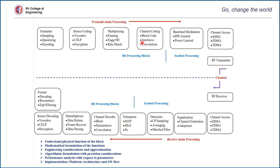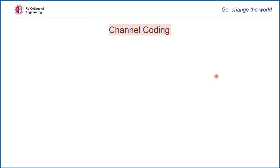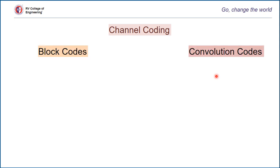Channel coding is often used to protect digital information from noise and interference and reduce the number of bit errors by introducing redundant bits. These redundant bits allow the detection and correction of bit errors. There are basically two main types of channel coding known as block codes and convolution codes.